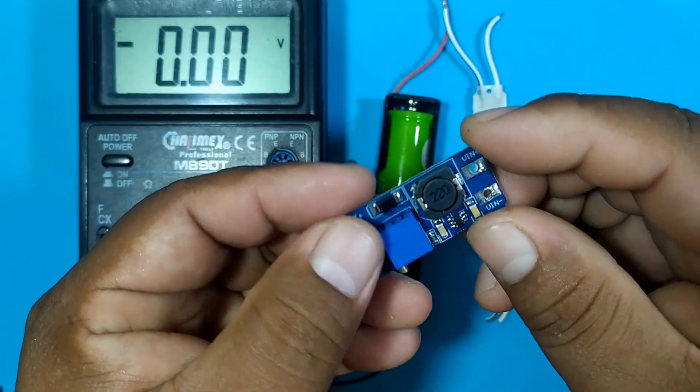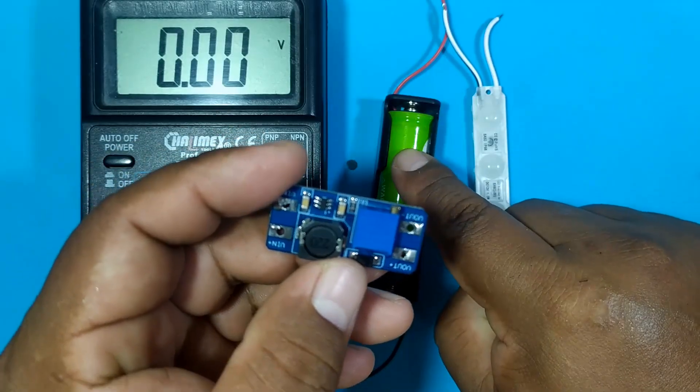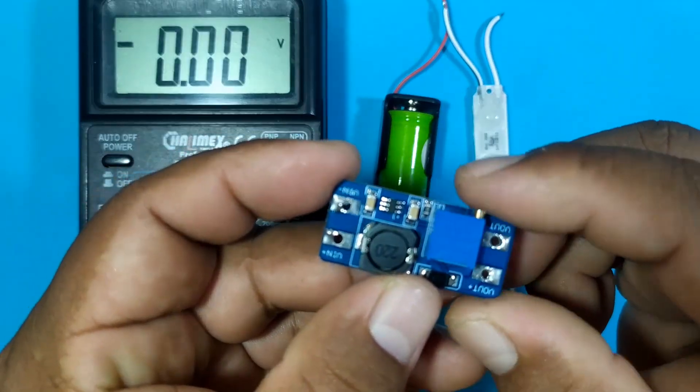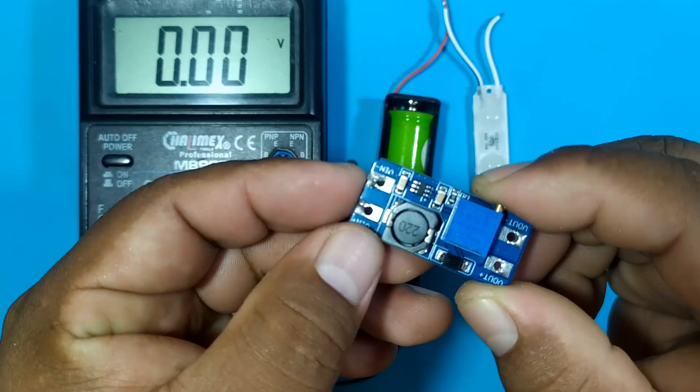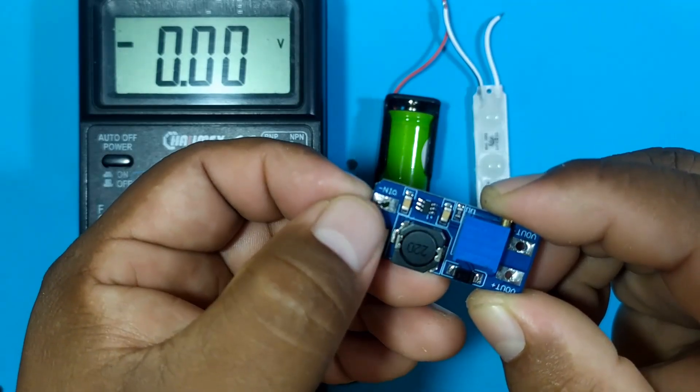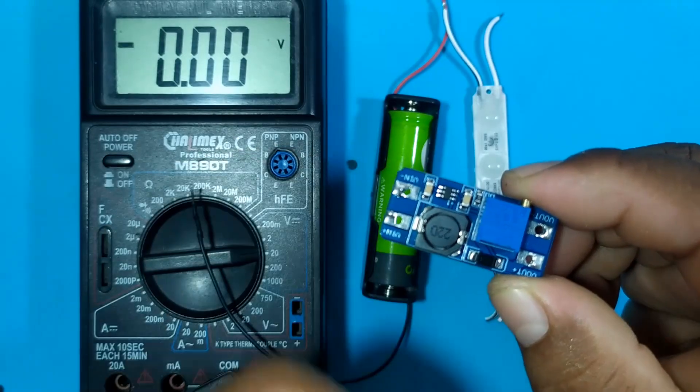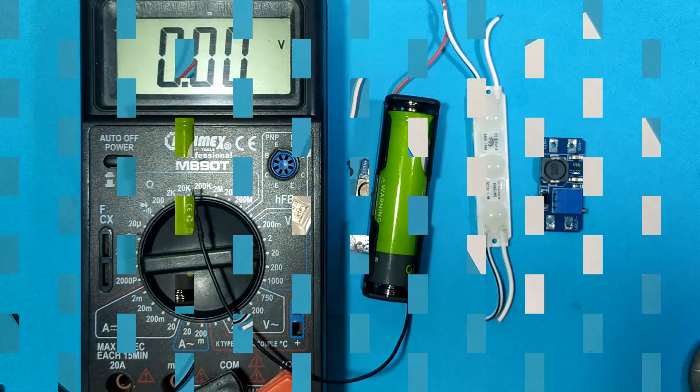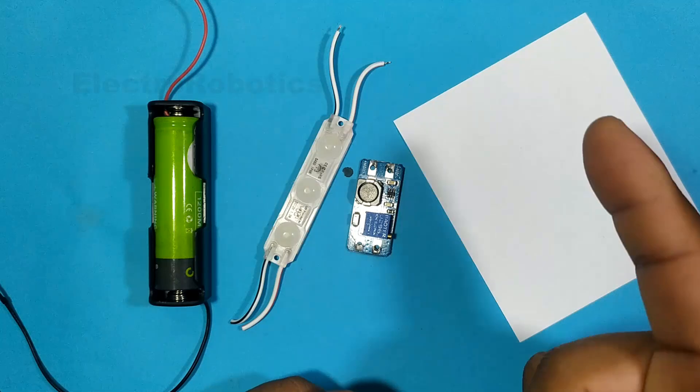So what we are going to do is solder our battery to the voltage inputs of the module, both to the positive input voltage and to the negative input voltage. But first a little theory.